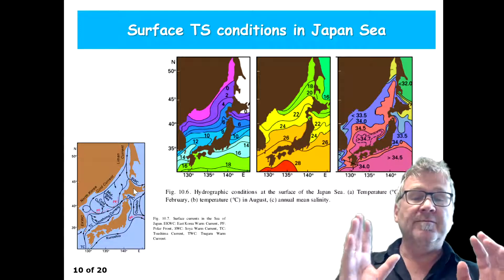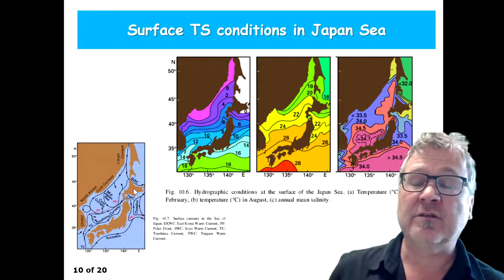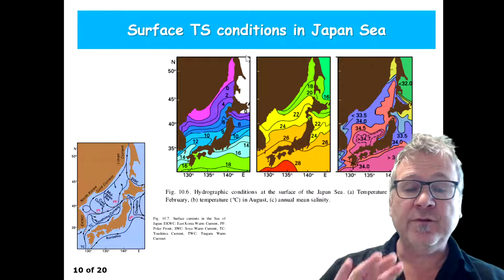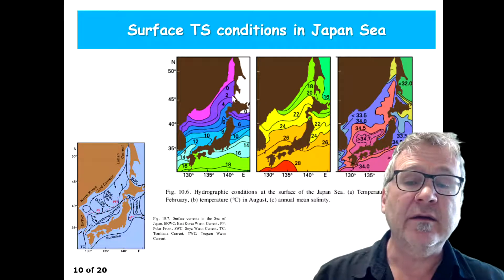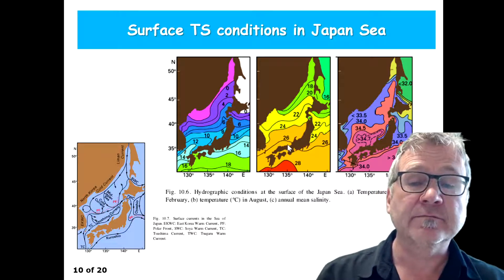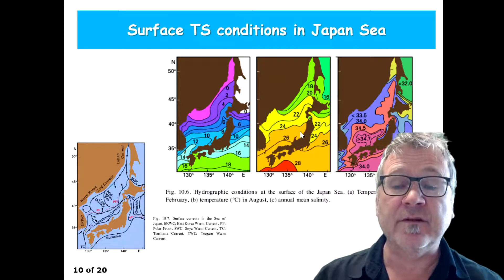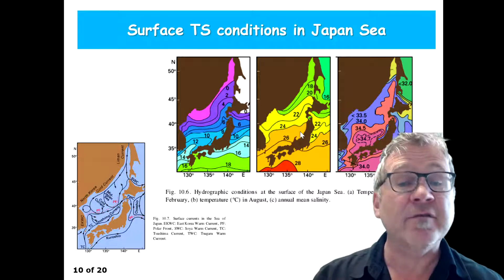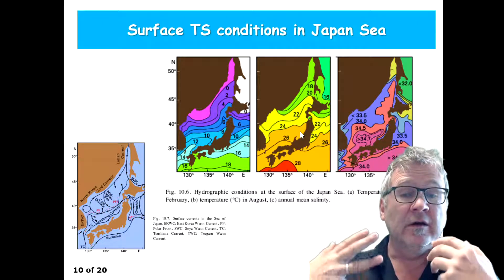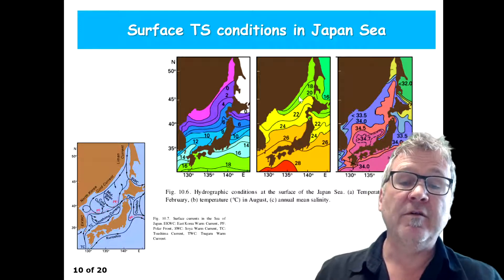And you can see this structure if you look at the temperature fields — it shows you some seasonal distributions. Let's have a look. What you see is the temperature at the end of winter and temperature at the end of summer. You can see significant differences in the temperature, up to almost 20 degrees. During wintertime you get very cold water, up to zero degrees, and during summer you get very warm water.